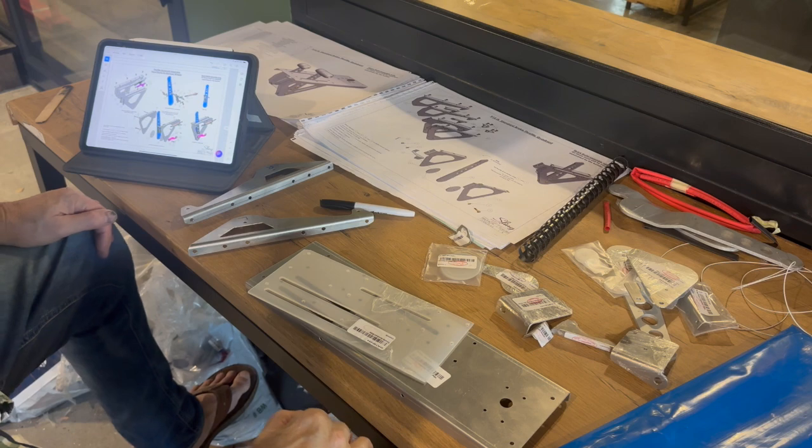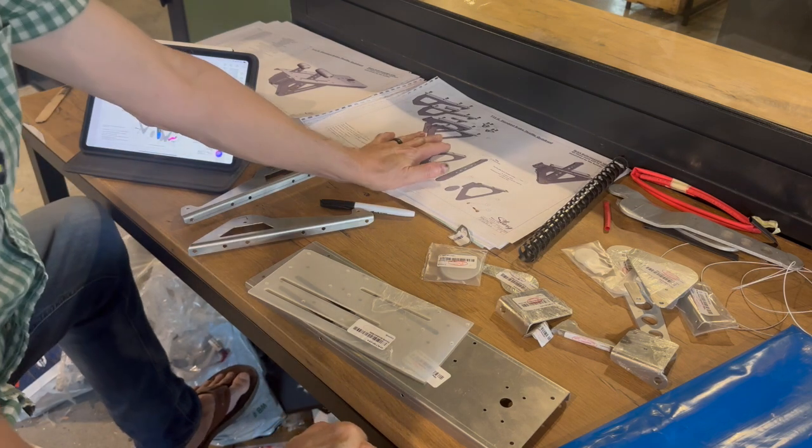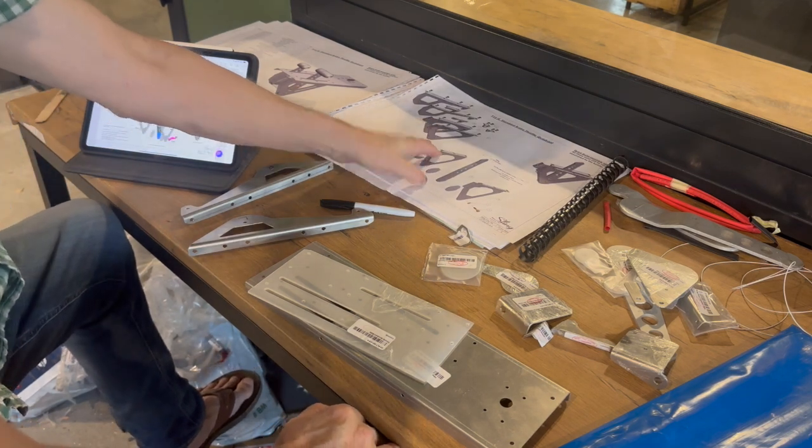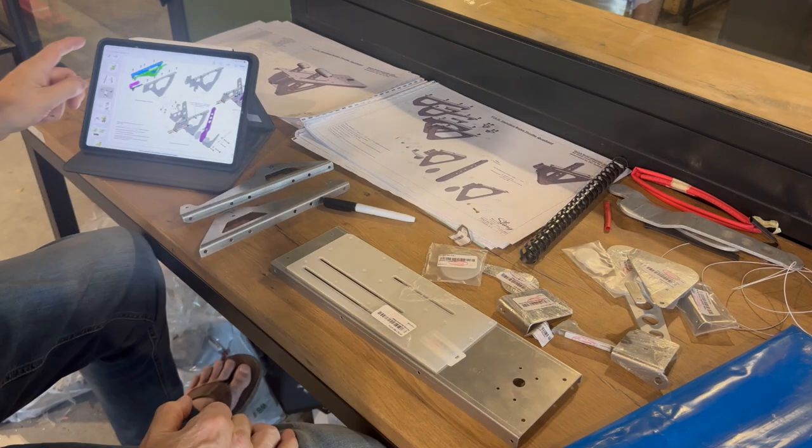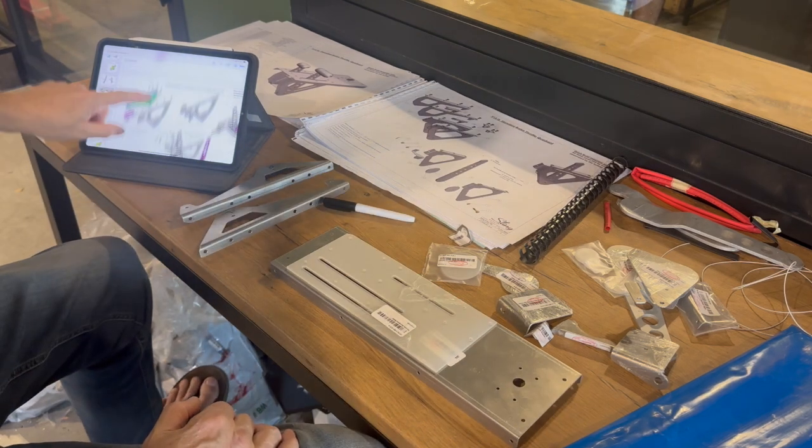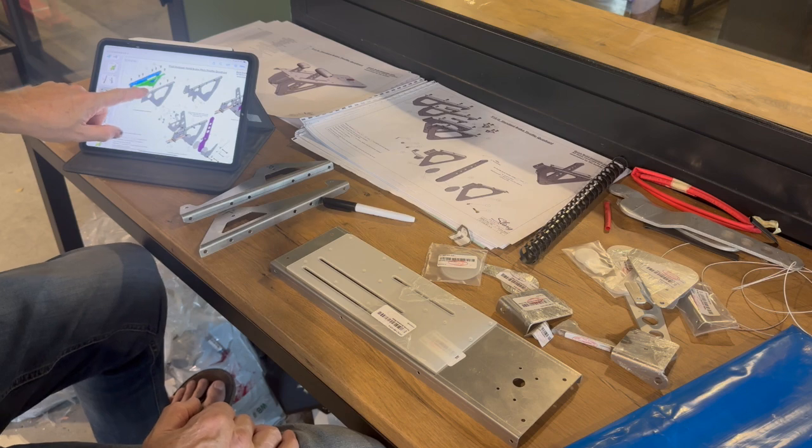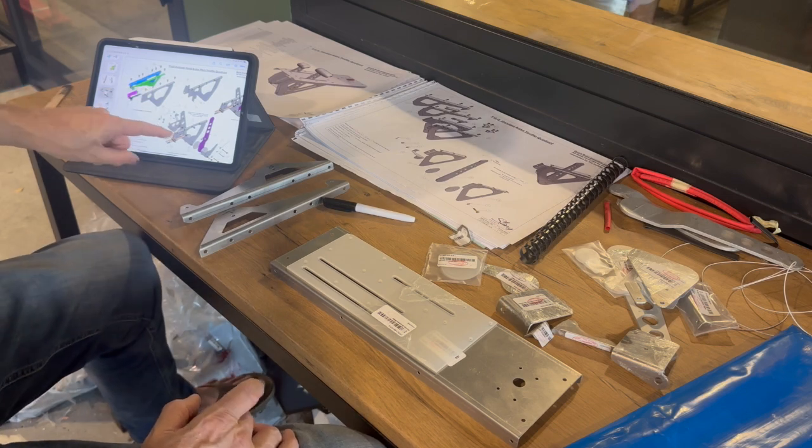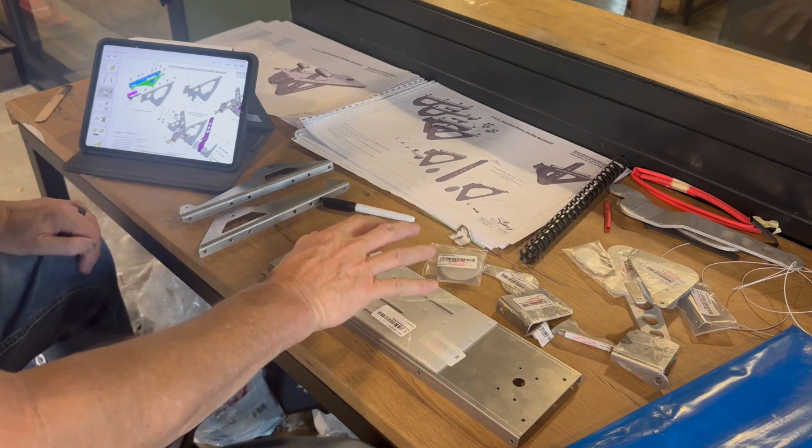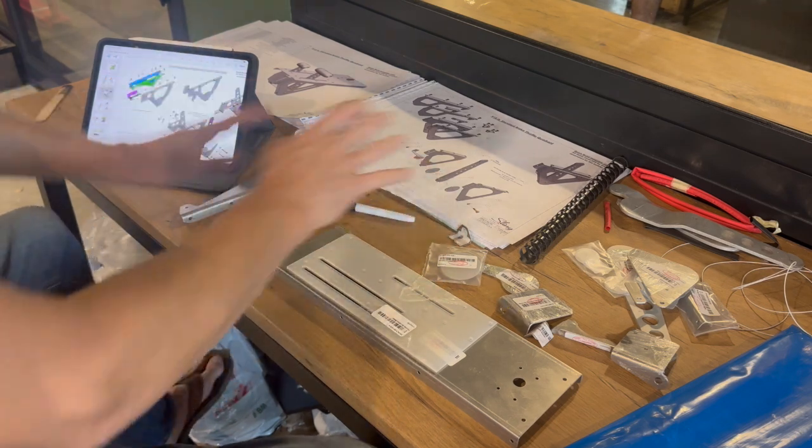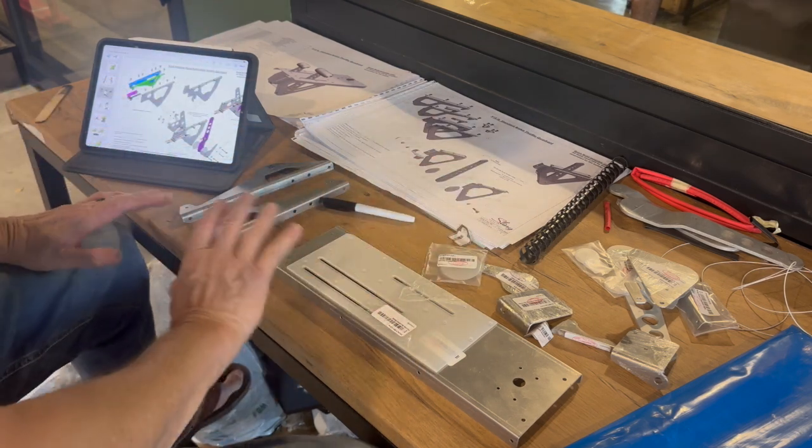In true Sling form, the TSi manual doesn't have all the information I need. It doesn't mention this throttle quadrant at all. I have the high wing build manual here, which has the prop control, so that's the closest I've got. I should be able to mix and match and get what I need.